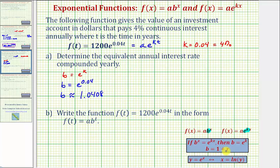1.0408 is the value of b. So if b equals one plus r, then in this case, r, the annual interest rate, is going to be equal to b minus one. We have r equals 1.0408 minus one, which equals 0.0408.